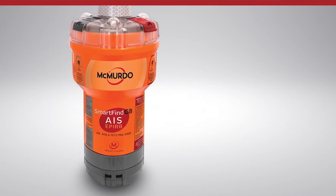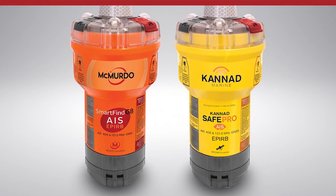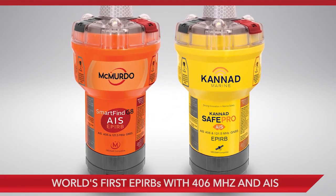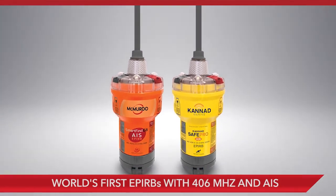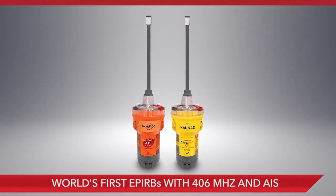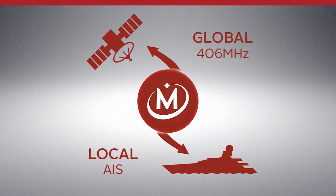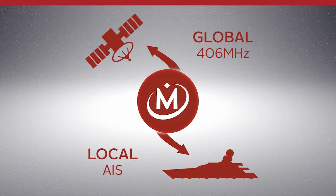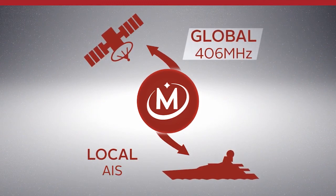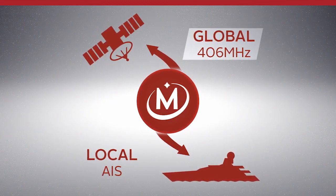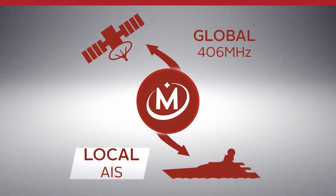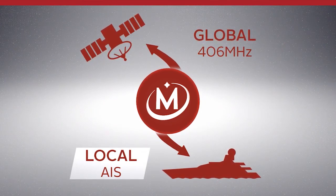The SmartFind G8 AIS and Canad SafePro AIS are the world's first EPIRBs to include both 406 MHz and AIS in a single beacon. This powerful convergence of frequencies in a single EPIRB maximizes the rescue process by combining the global alert and location of 406 MHz with the localized alert and rescue capabilities of AIS.